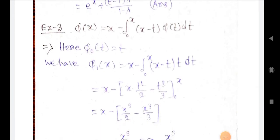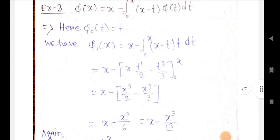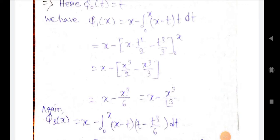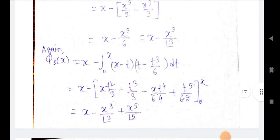Example 3: φ(x) = x - ∫₀ˣ (x-t)·φ(t) dt. Here φ₀(t) = t. We have φ₁(x) = x - ∫₀ˣ (x-t)·t dt = x - [t²/2 - t³/3] from 0 to x = x - x³/2 + x³/3 = x - x³/6 = x - x³/3!.